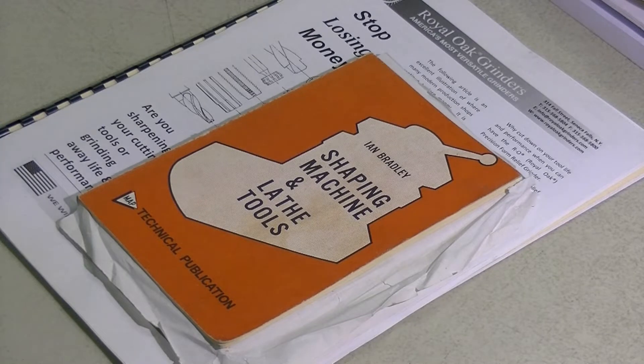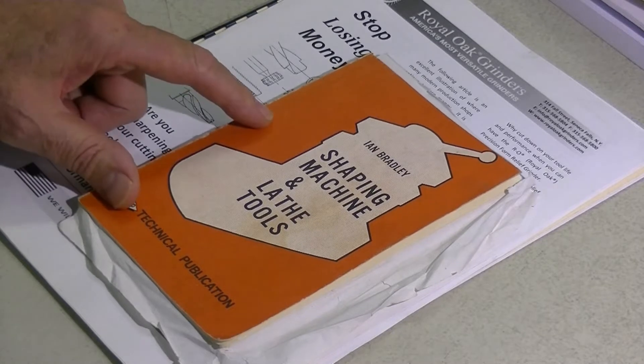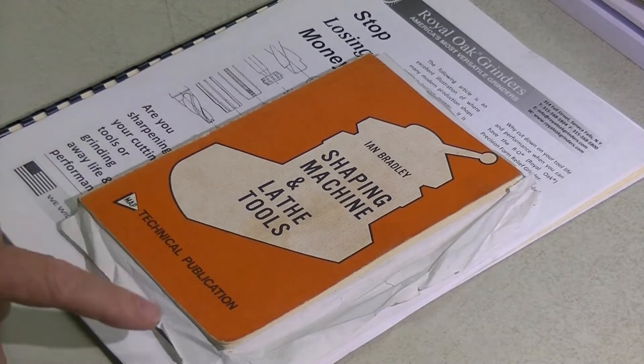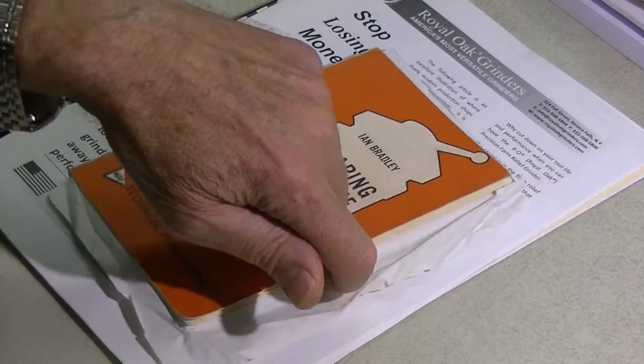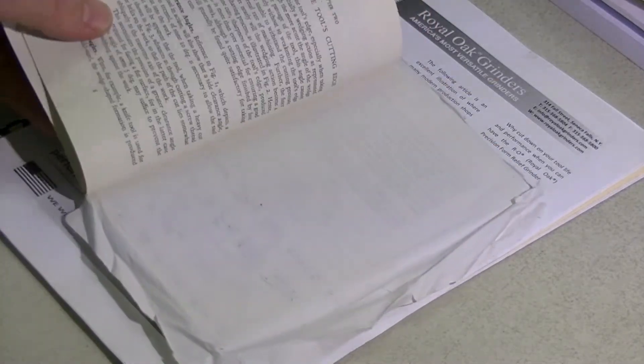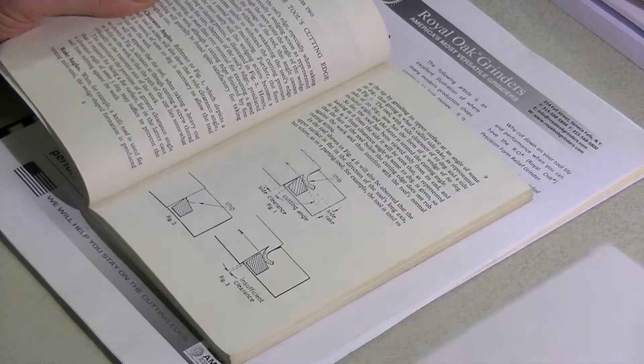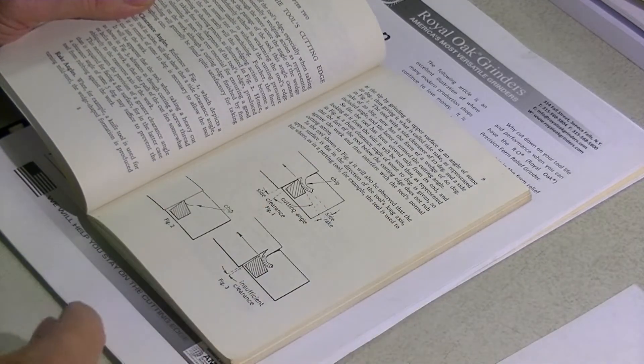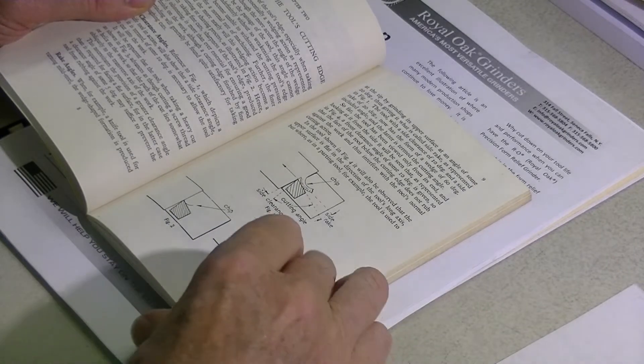A lot of the older books go into very good explanation, like this Bradley's book on shaping machines and lathe tools, technical publication from Map Publishers. That's one of the better original books, good place to start. Shows you about basic cutting edges, where the clearance has to be, what is the rake angle.